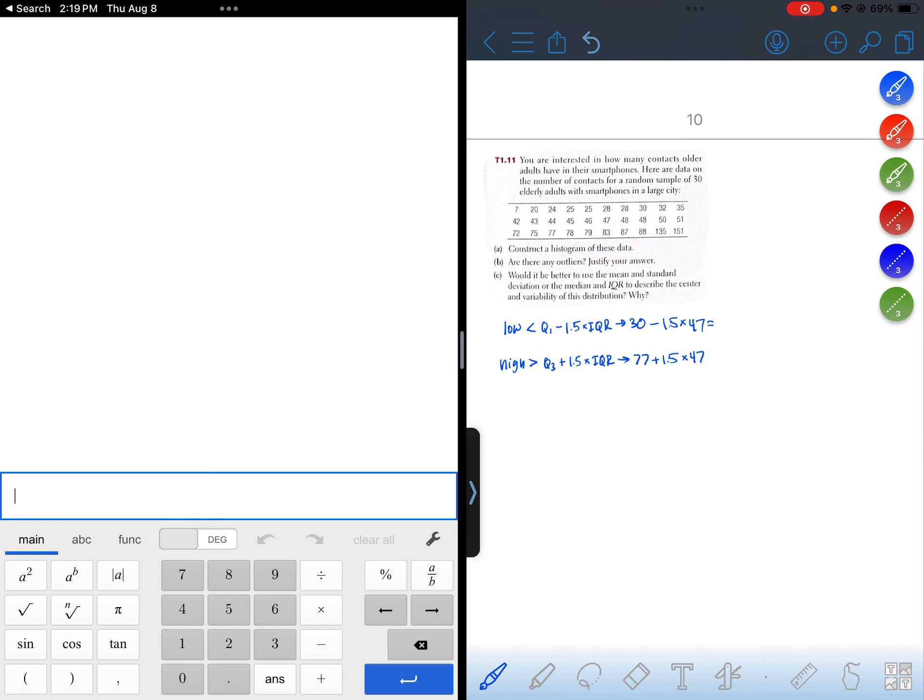Okay, so 30 minus 1.5 times 47. So low outliers would be anything less than negative 40.5. That's not even possible. You can't have a negative value for this variable, so no low outliers.